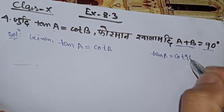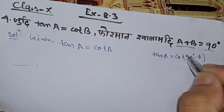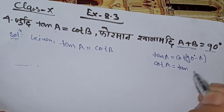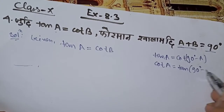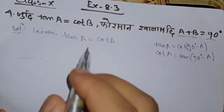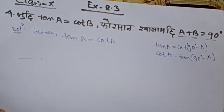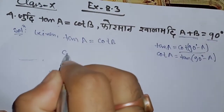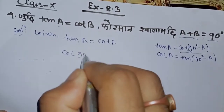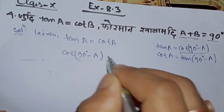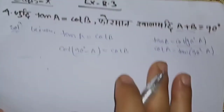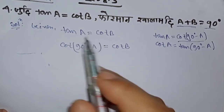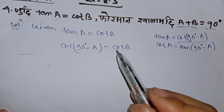Cot 90 degree minus A. So we have tan A and cot B. There are some identities and we are the same one.